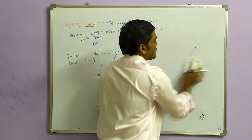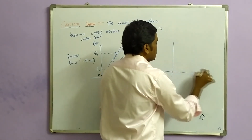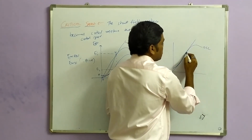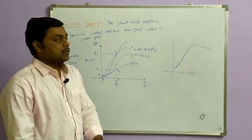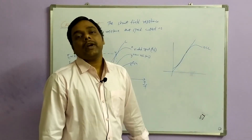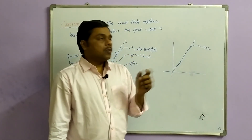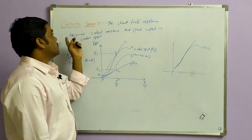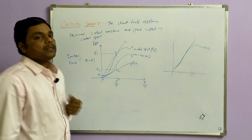This critical speed is obtained as follows. In the previous case, we discussed critical resistance — if you draw the OCC and draw the tangential line, where you get the critical field resistance is the maximum resistance you can put for your field winding. If you increase beyond this, your generated EMF may not be possible. At this resistance, the motor running speed is called the critical speed.